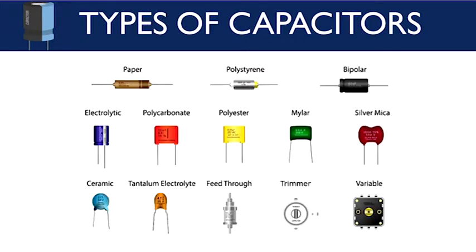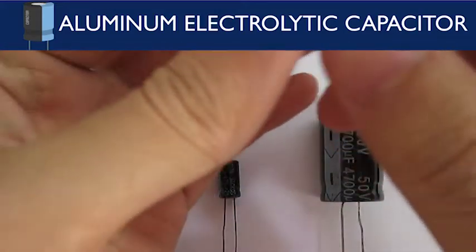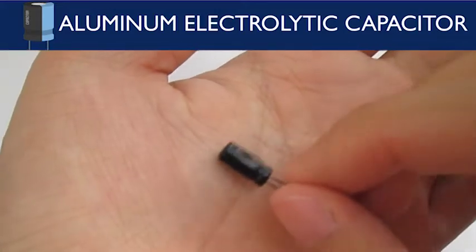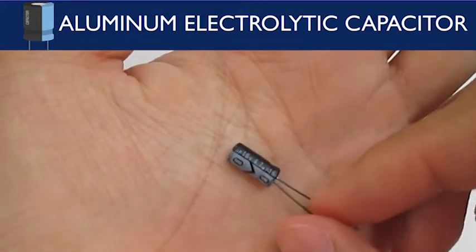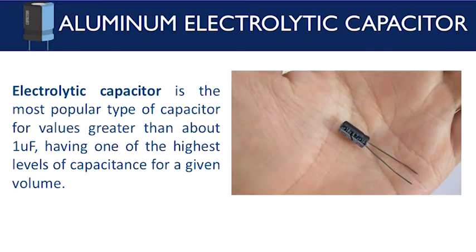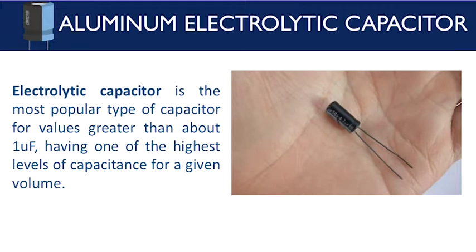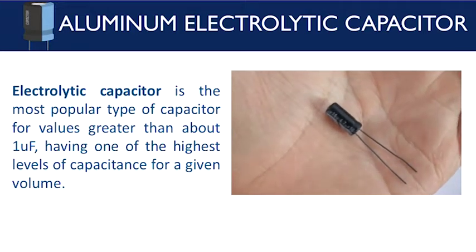There are several types of capacitors as shown in this figure. Let us enumerate some common types. The first common type is the aluminum electrolytic capacitor. Electrolytic capacitor is the most popular type of capacitor for values greater than about 1 microfarad, having one of the highest levels of capacitance for a given volume.